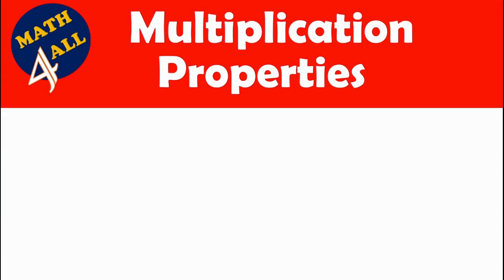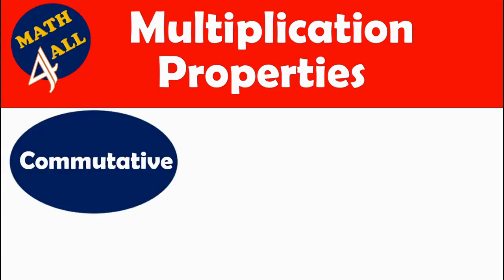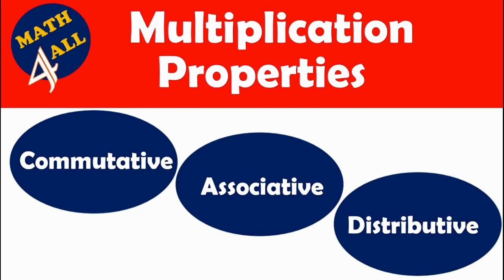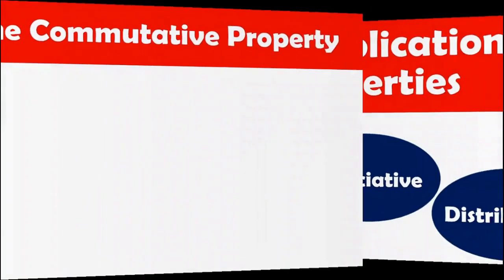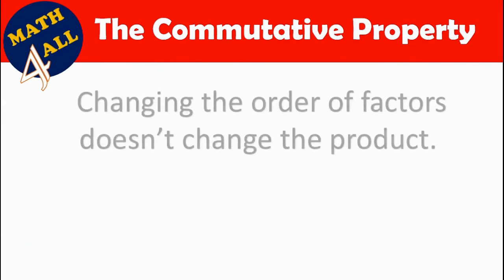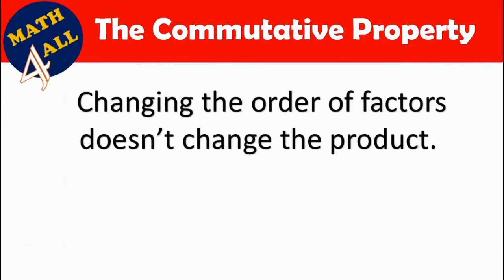The multiplication properties. In this lesson you have to learn: first, the commutative property; second, the associative property; third, the distributive property. Let's start with the commutative property. It means changing the order of factors doesn't change the product.